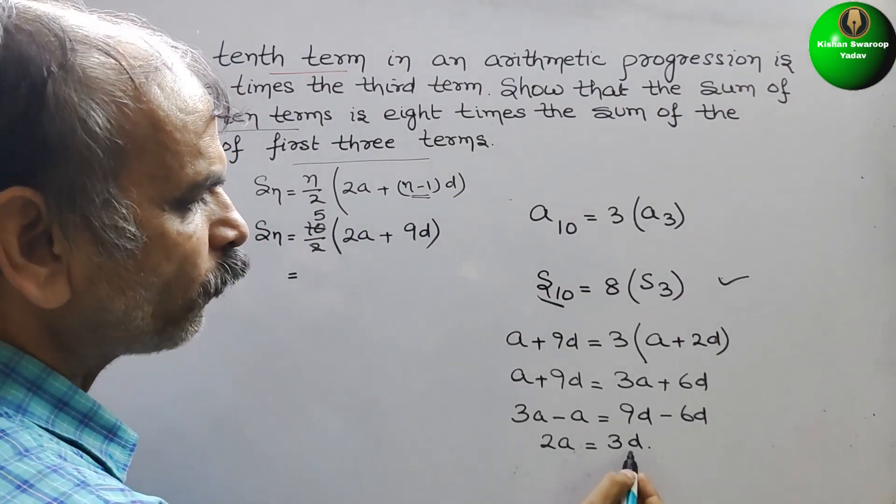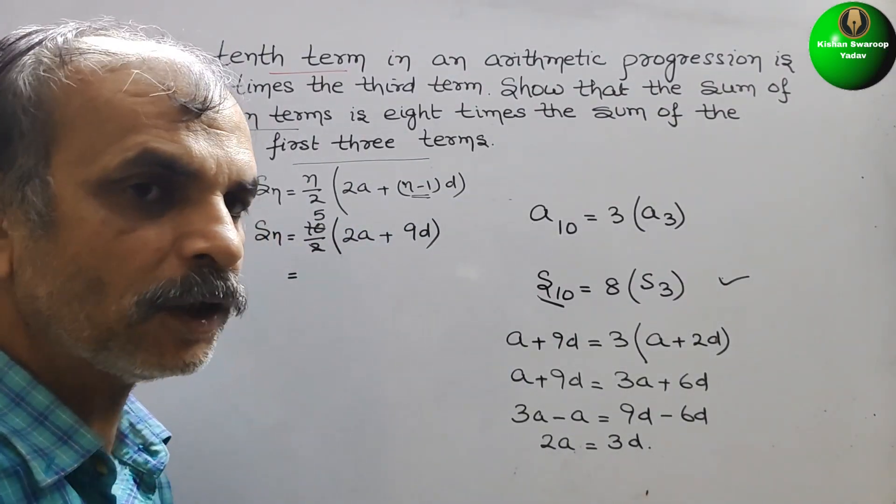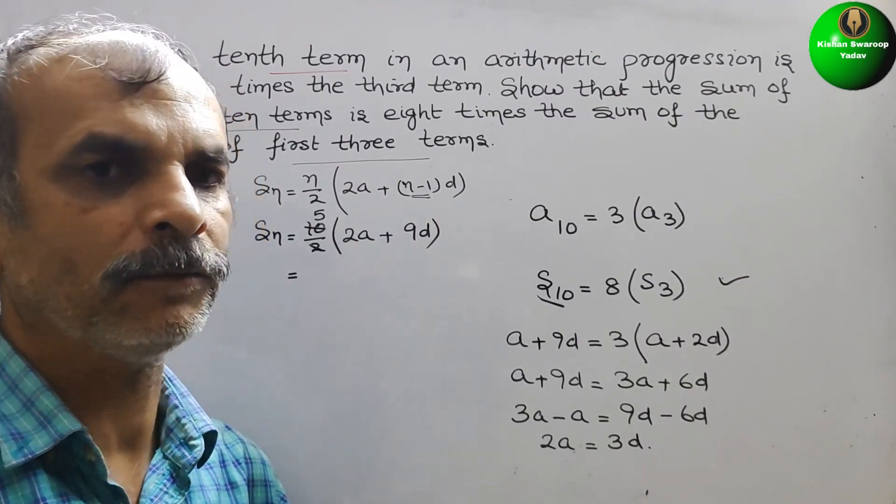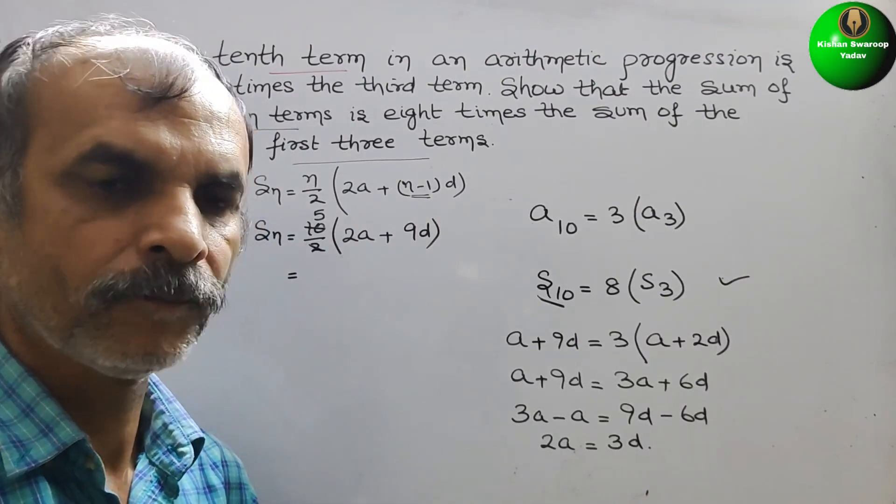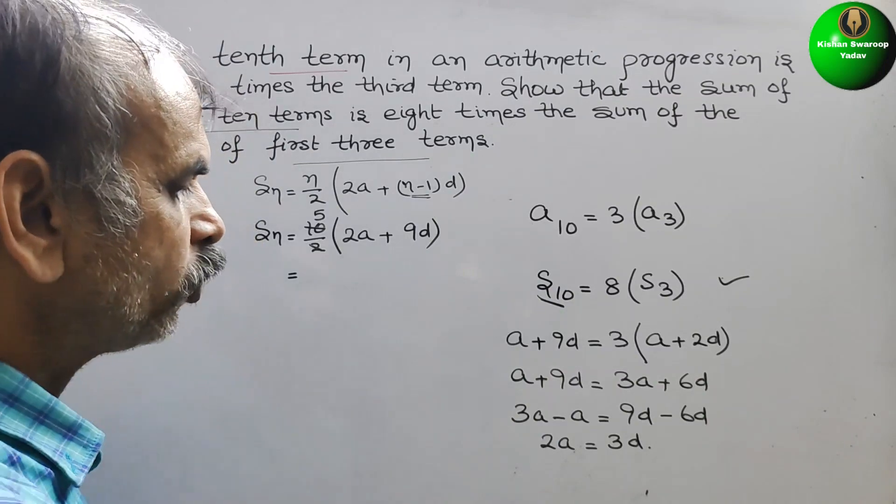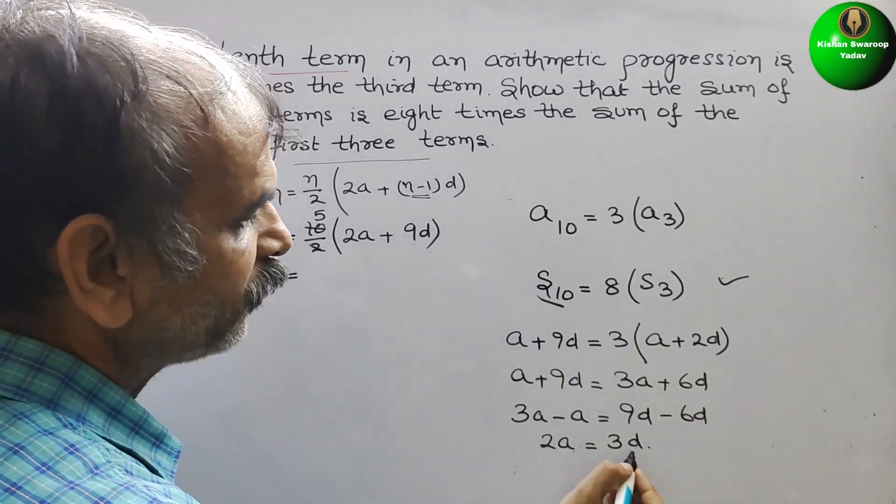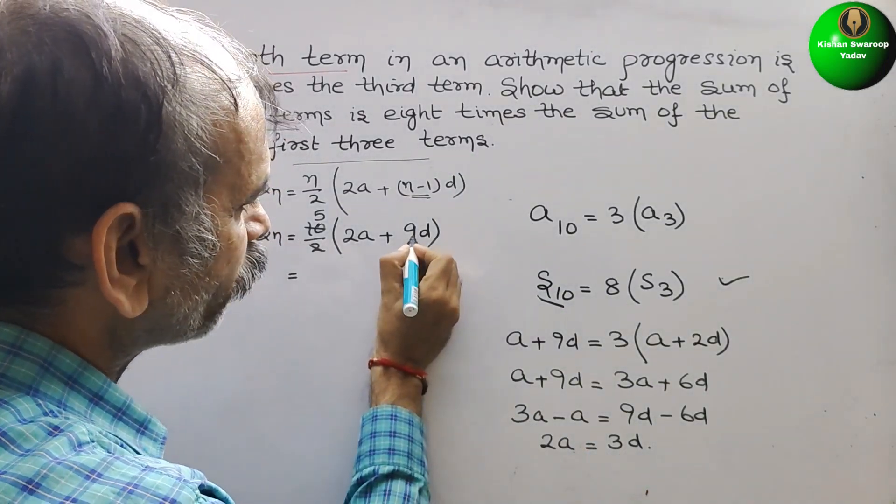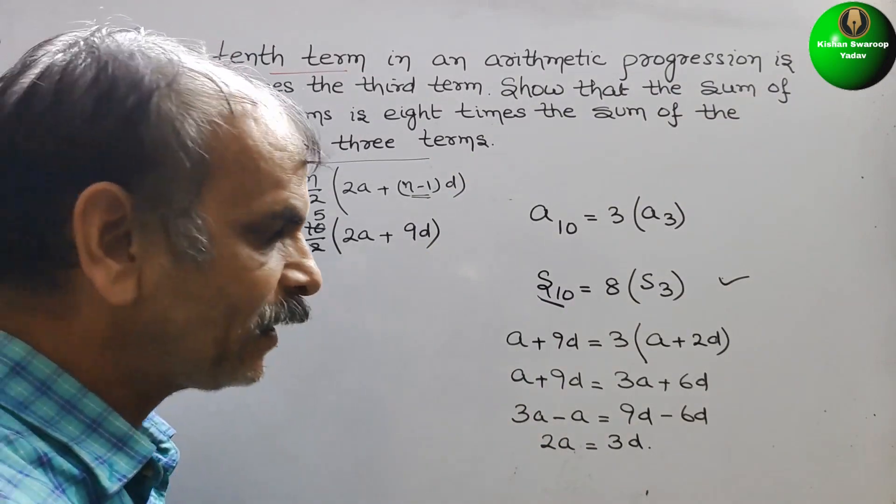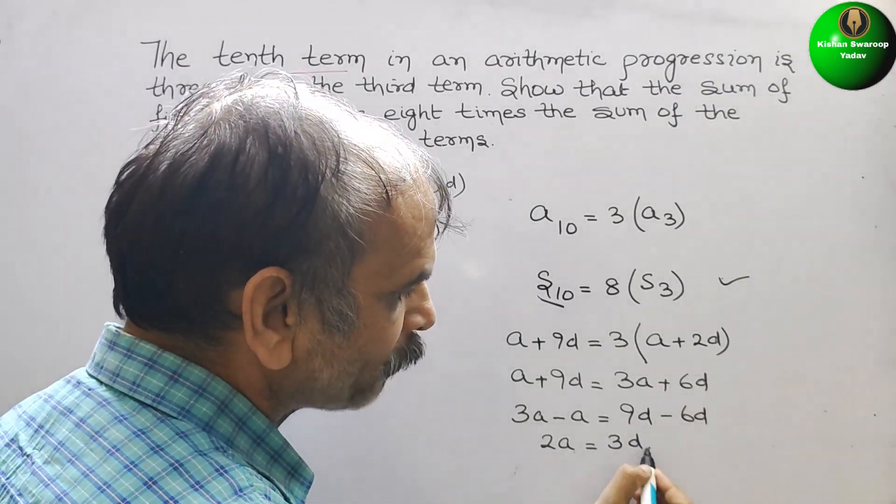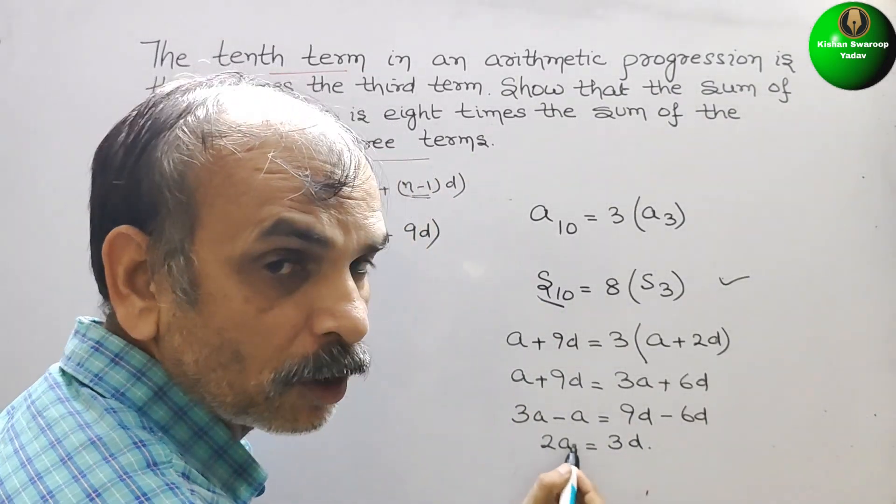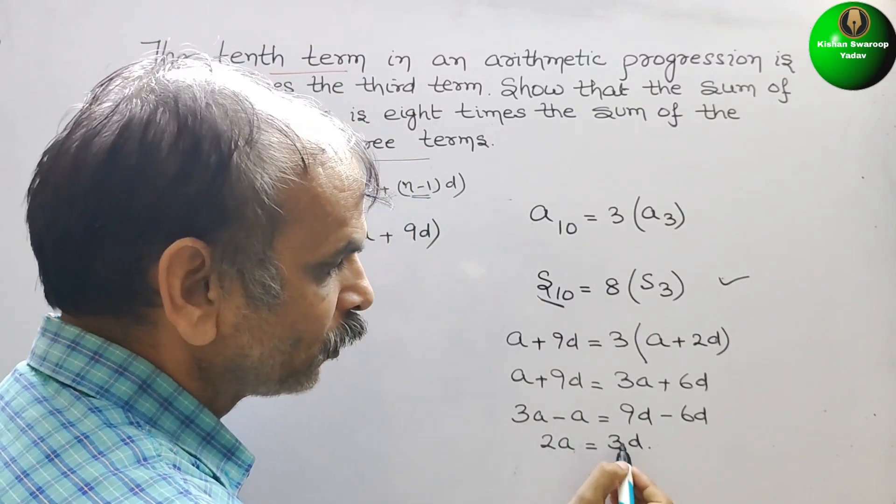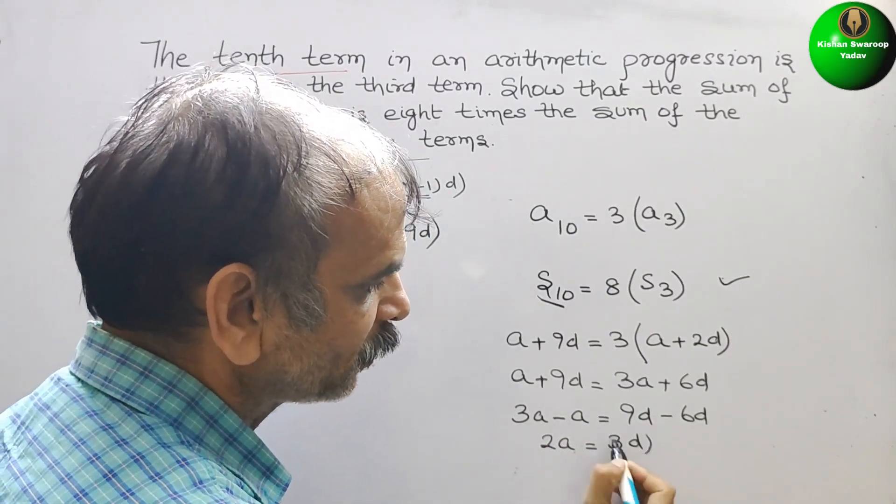So we can go for any of these two. We will go for A only, not the difference. So here you can see in place of 9D, what we will write? Here if you multiply by 3, here also you have to multiply by 3. So here see this into 3, this also into 3. So this will be 6A.